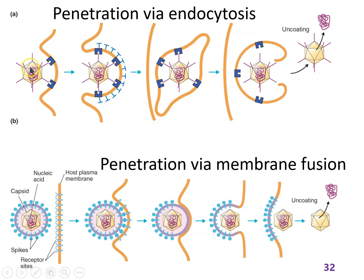The first is endocytosis, or receptor-mediated endocytosis. The spike proteins on the virion attach to receptors on the cell surface, forming a sphere around the virion that pinches off, leaving the virus inside a vesicle in the cytoplasm. The virion then has to have a way of breaking out of the vesicle, and then a way of getting the nucleic acids out of the capsid.